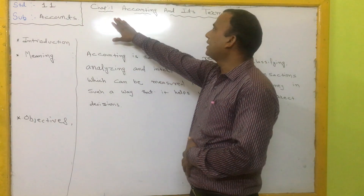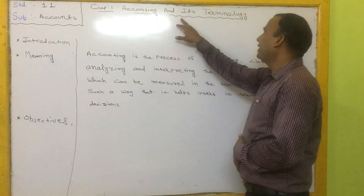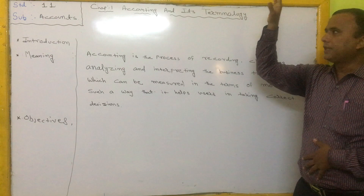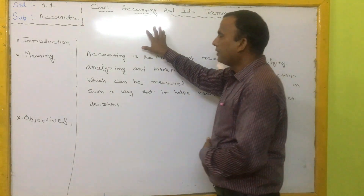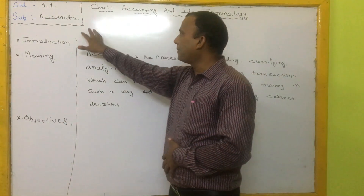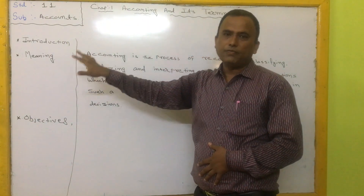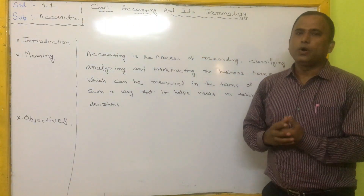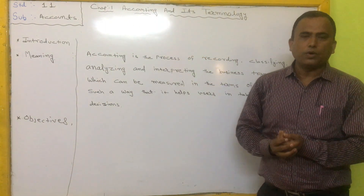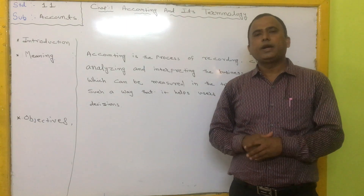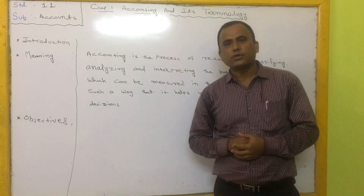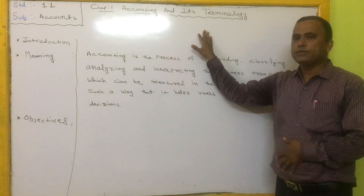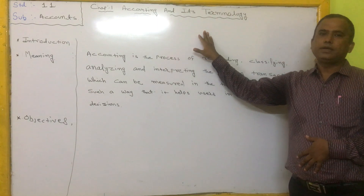Now, chapter number 1 is: Accounting and its Terminology. In this chapter, we will discuss the concept of accounting, the definition of accounting, objectives, advantages and limitations of accounting, as well as various accounting terms.